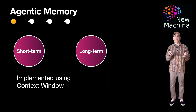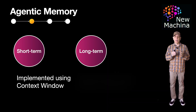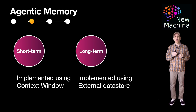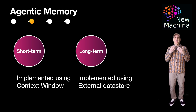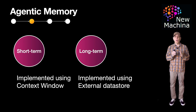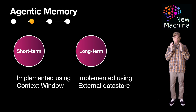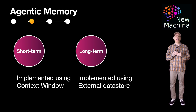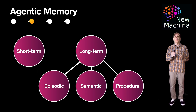So how is long-term memory implemented? Well, long-term memory is typically implemented using an external data store, which stores information for easy retrieval. It's common to use a RAG pipeline, leveraging a vector database to integrate stored knowledge to be powered back up with LLM prompts. In simple terms, long-term memory is like a library where information is stored, cataloged, and accessed when needed. So it turns out there are different types of long-term memory. Examples include episodic, semantic, and procedural memory, with each serving different functions.